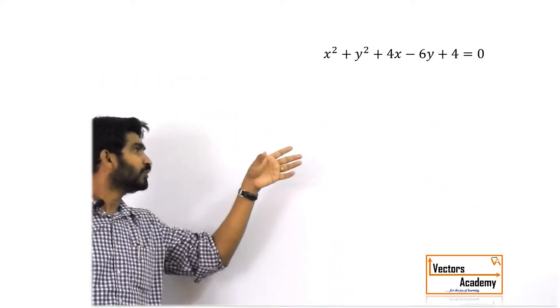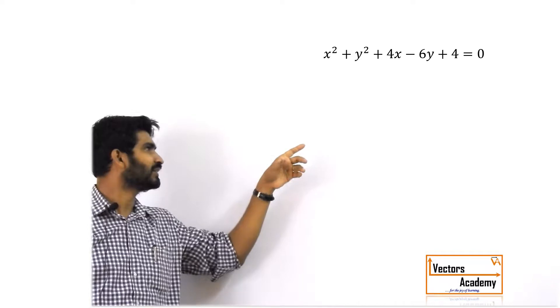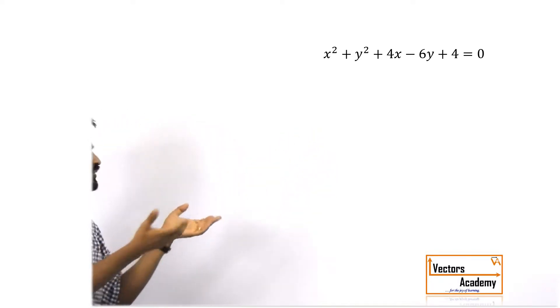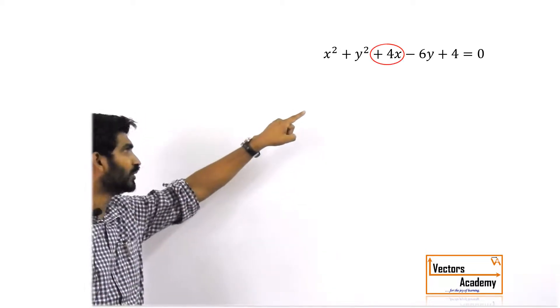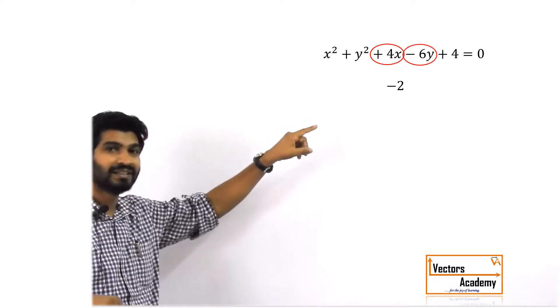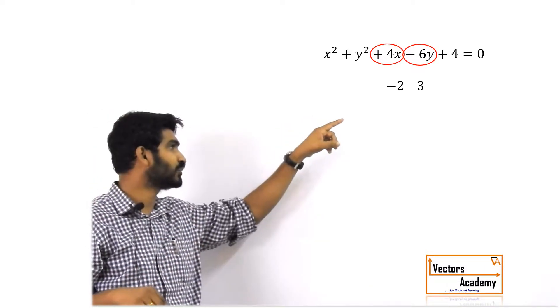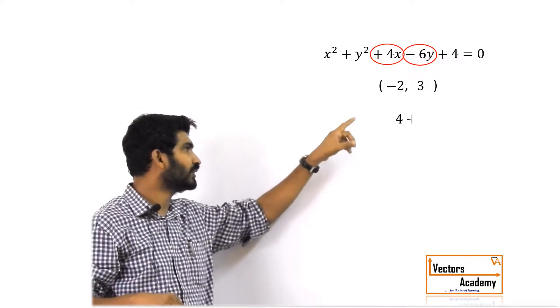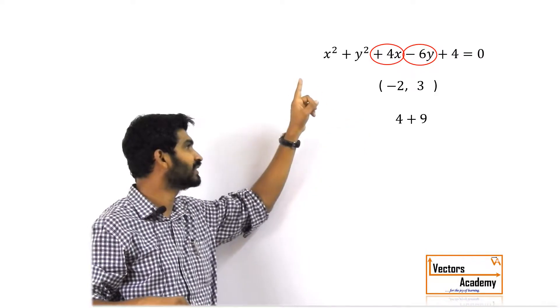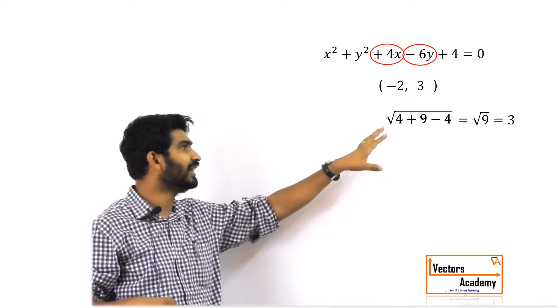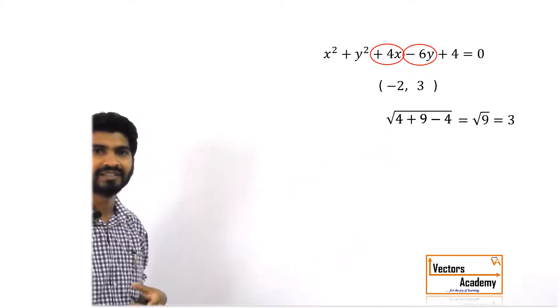Let's have a few more examples. Suppose the equation is x² + y² + 4x - 6y + 4 = 0. By visualizing: coefficient of x is 4, multiply by half and change sign → -2. Coefficient of y is -6, multiply by half and change sign → 3. So center is (-2, 3). For radius: √(2² + 3² - 4) = √(4 + 9 - 4) = √9 = 3.